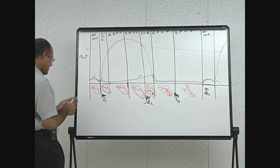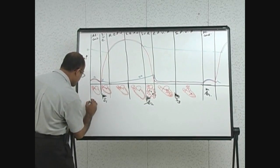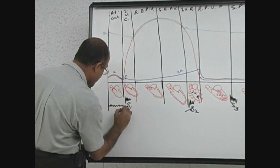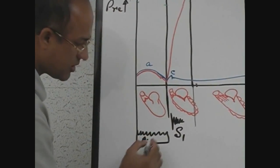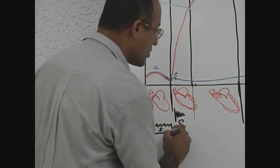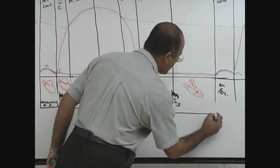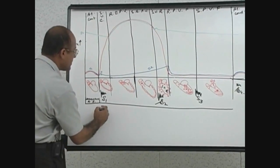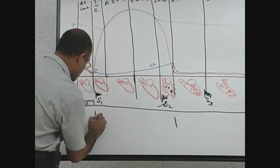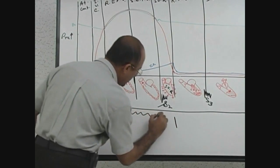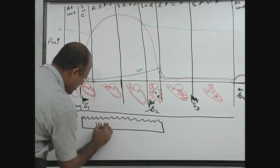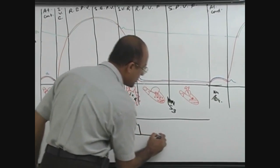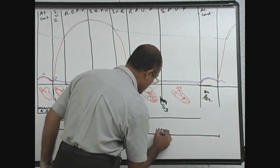Another way to correlate these concepts: this period was atrial systole, and continuing up to here was atrial diastole. From here up to this phase was ventricular systole, and of course what follows here was ventricular diastole.